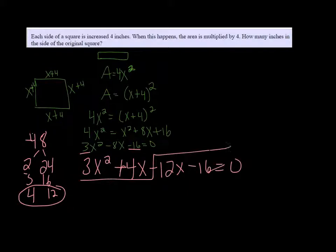And then I can factor by grouping. So taking an X out, I get 3X plus 4. And over here, I can take out a negative 4 and get 3X plus 4.